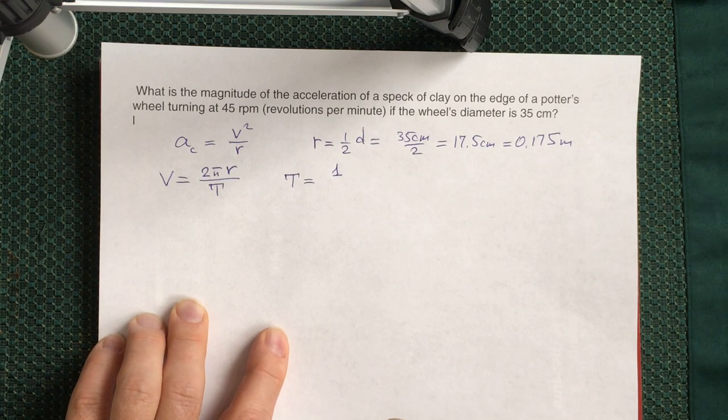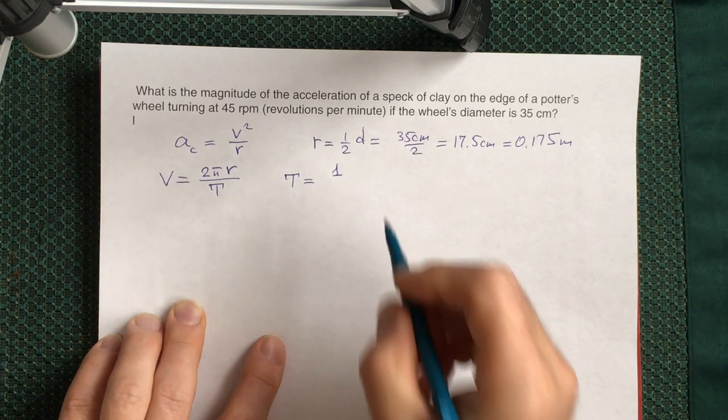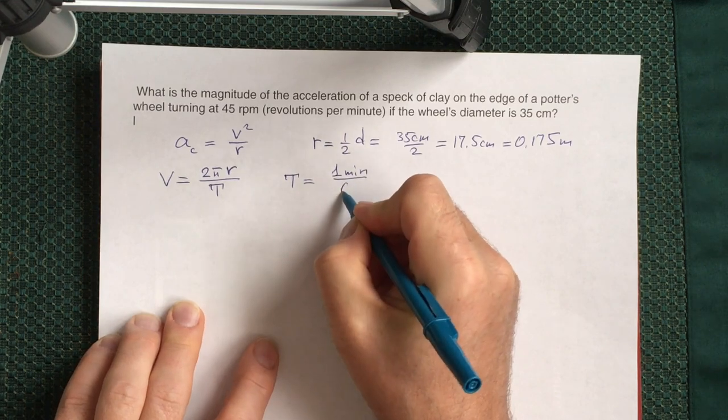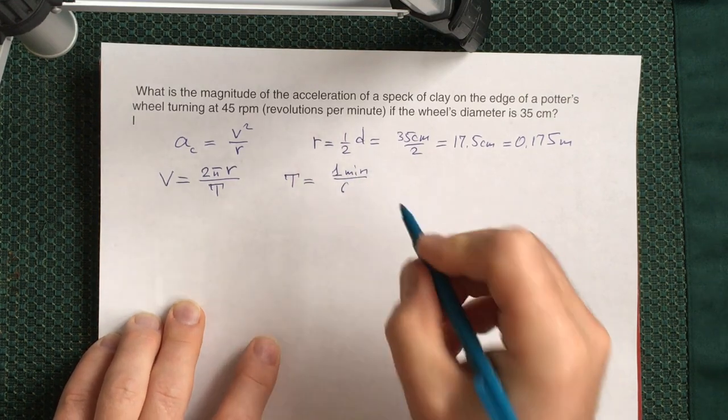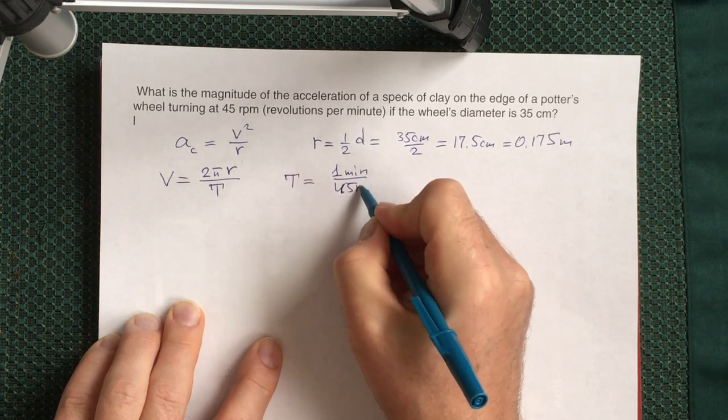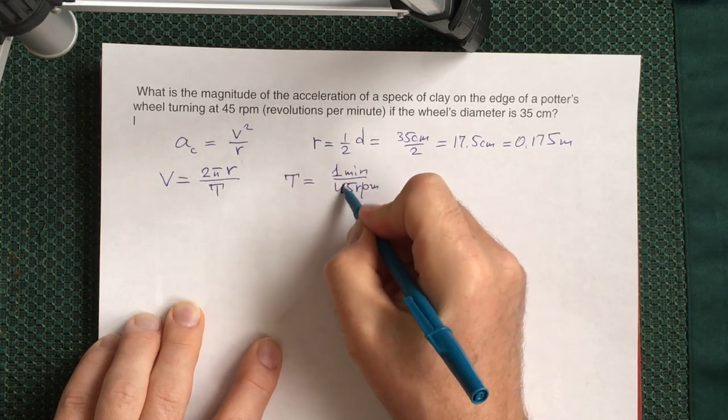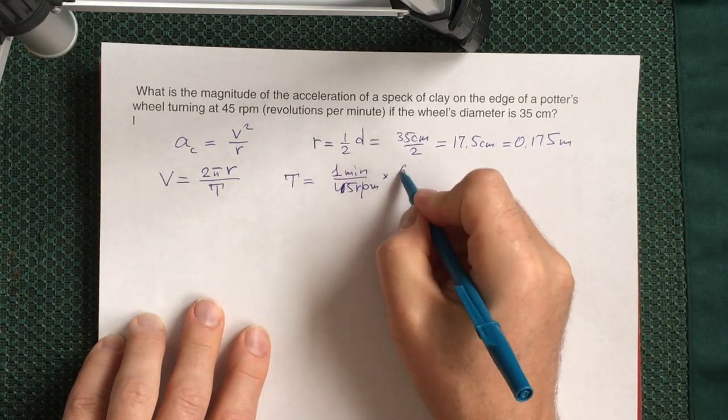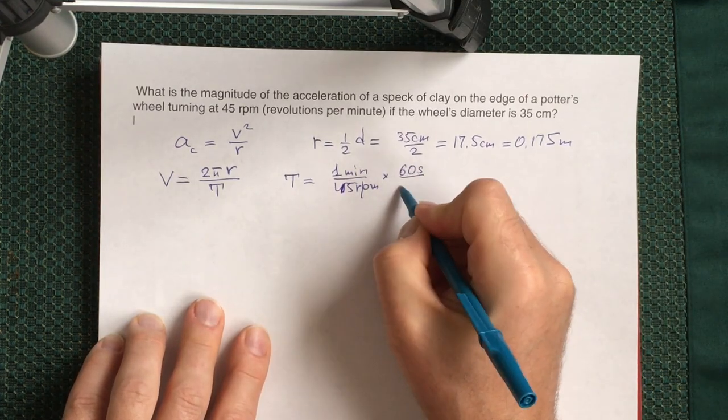What you have to do formally is take one minute divided by 45 rpm. You will have how many rotations per minute, and you have to multiply by 60 seconds per one minute.